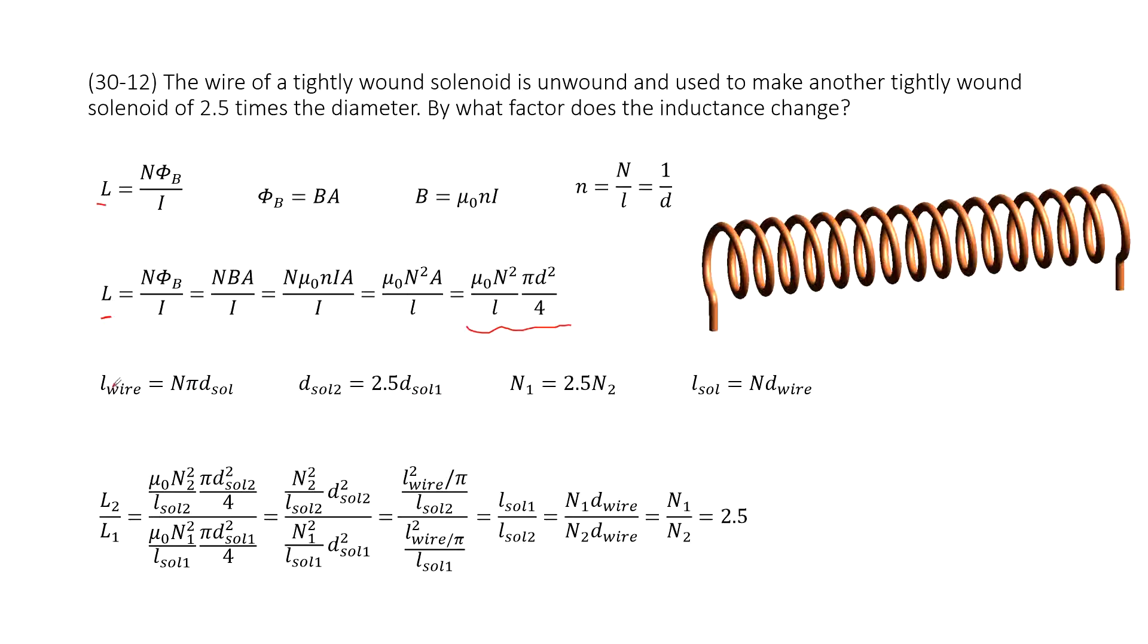So this wire length can be written as n, how many turns it has, times π times d. d is the diameter for solenoid.